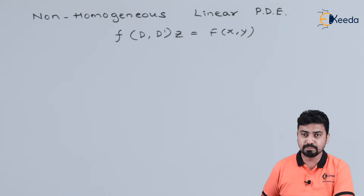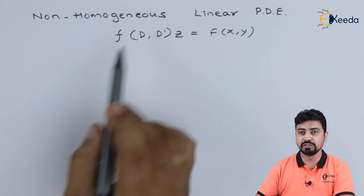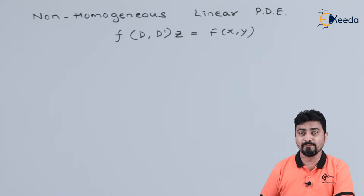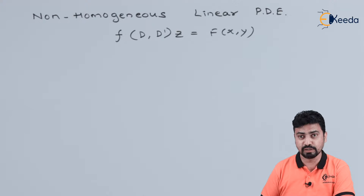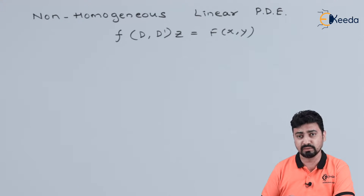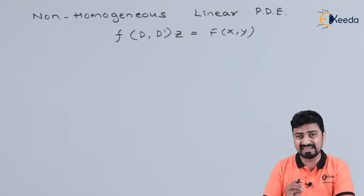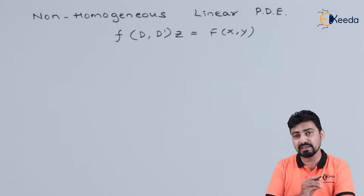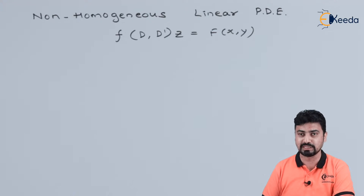The only difference is that this is non-homogeneous, which means we can have various powers of partial derivatives of z. We can have the first order derivative of z, the second order, and also the third order derivative of z in the same equation — that is, del z, del squared z, as well as del cubed z. Hence, it is non-homogeneous.